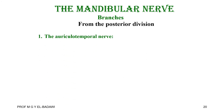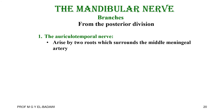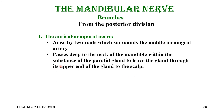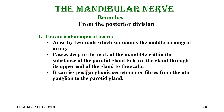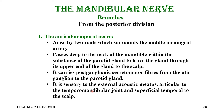From the posterior division: the auriculotemporal nerve arises by two roots around the middle meningeal artery, passes deep to the neck of the mandible within the substance of the parotid gland, and leaves through the gland's upper end. It carries parasympathetic secretomotor fibers from the otic ganglion to the parotid gland. It is also sensory to the external acoustic meatus, gives articular branches to the temporomandibular joint, and superficial temporal branches to the scalp.